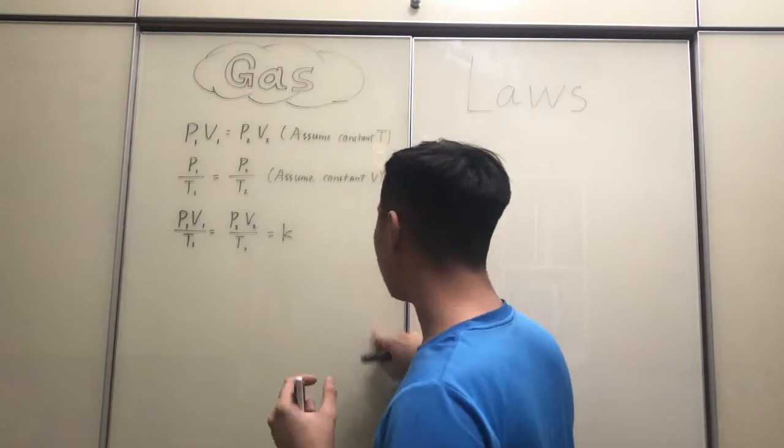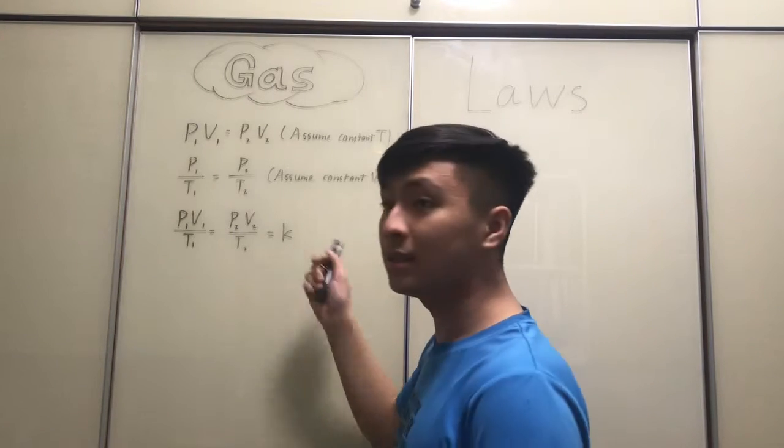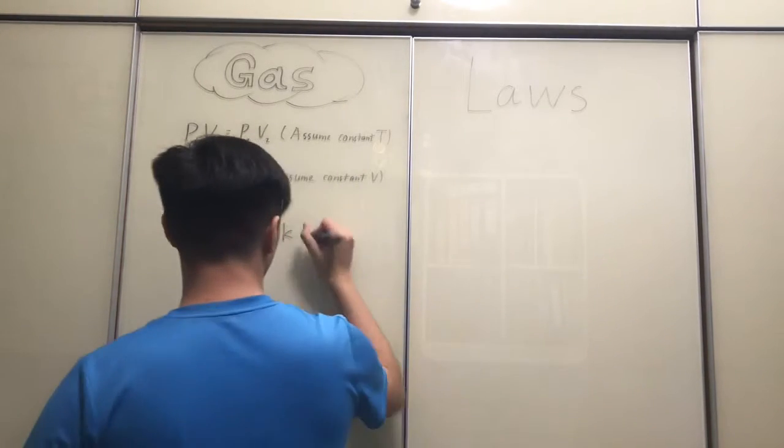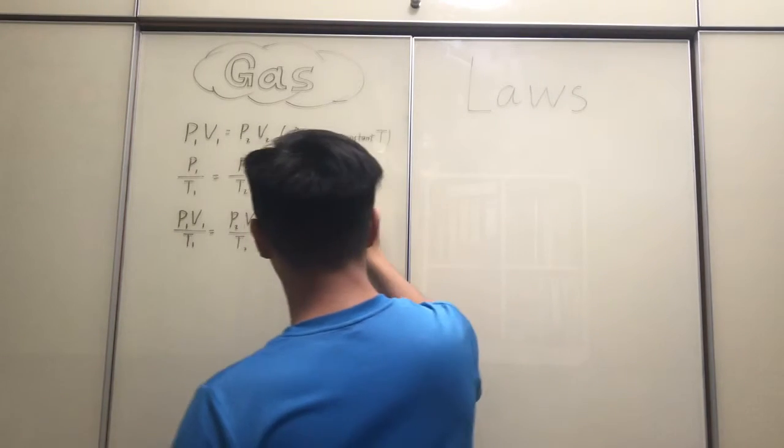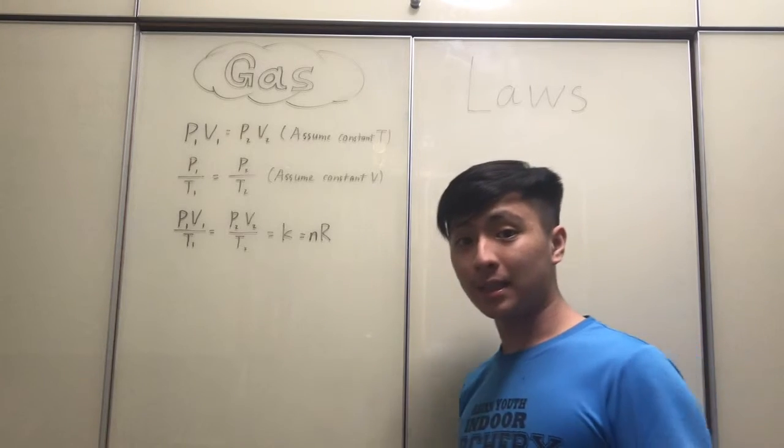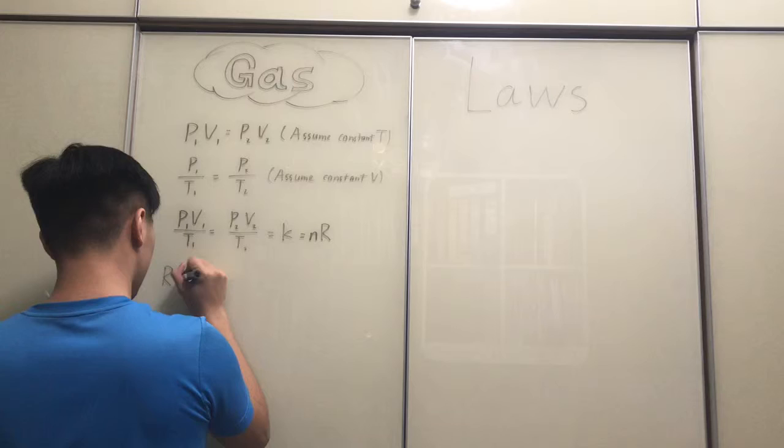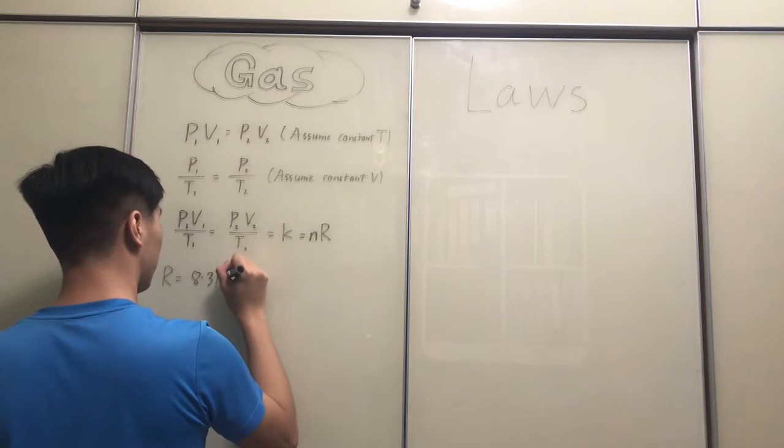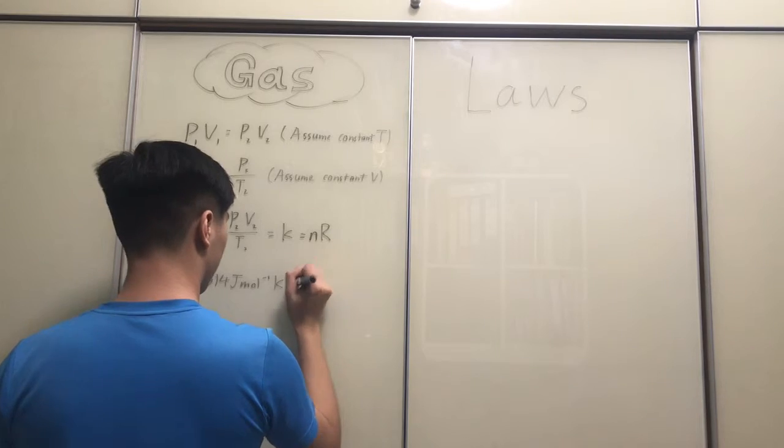Because of this, this is equal to some constant K, because if both of these are equal, then that means there has to be a common constant. Now, through further experimentation, they were able to determine the value of the constant. So the value of the constant is actually equal to the number of moles of a substance multiplied by another constant R. So R in this case is the gas constant, which is R equals 8.314 joules per mole per Kelvin.